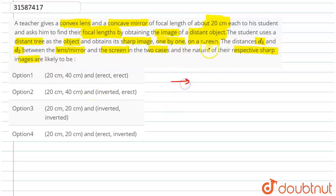First of all, we have obtained an image on the screen. If it is obtained on the screen, then it will be a real image. We always remember that an image obtained on the screen will be a real image.